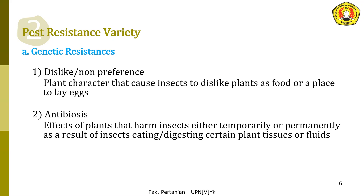Number two is antibiosis. Antibiosis is the effect of a plant that harms insects, either temporarily or permanently. (Antibiosis adalah efek yang ditimbulkan oleh tanaman yang merugikan serangga baik sementara maupun dalam jangka waktu yang lama.) This effect will be experienced by the insect when the insect is eating certain plant tissue or fluid. (Efek antibiosis itu akan terjadi pada tubuh serangga apabila serangga memakan atau menelan sebagian jaringan atau cairan dari tanaman tersebut.)